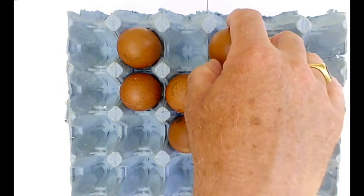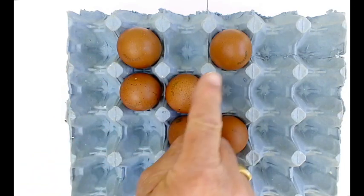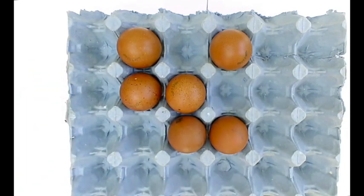If I move that one egg to the top row, it now works. Because I have an even number of eggs in each row and an even number in each column.